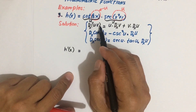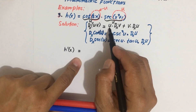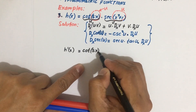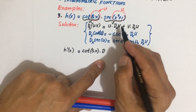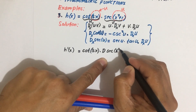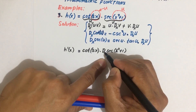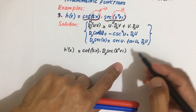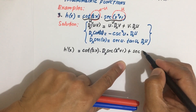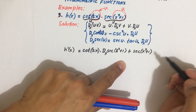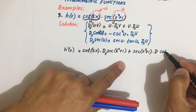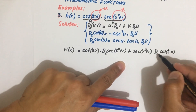Applying the product rule, h prime of x equals u times the derivative of v, so that is cotangent 5x times the derivative of secant of (x squared plus 1) with respect to x, plus v times the derivative of u, which is secant of (x squared plus 1) times the derivative of cotangent 5x with respect to x.